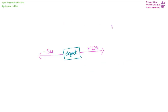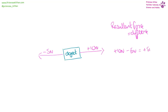If we're looking for the resultant force, we need to find the difference between them. For example, 10 + 10 newtons minus 5 newtons gives us +5 newtons in that direction. For the second example, +2 newtons minus +2 newtons gives us zero newtons as the overall resultant force, so there is going to be no movement.